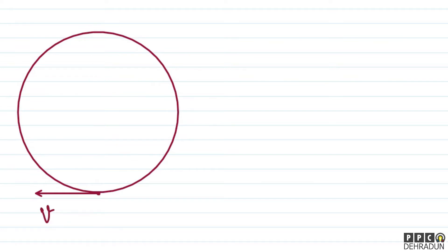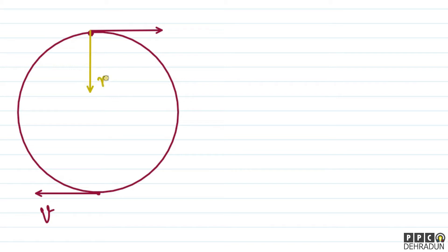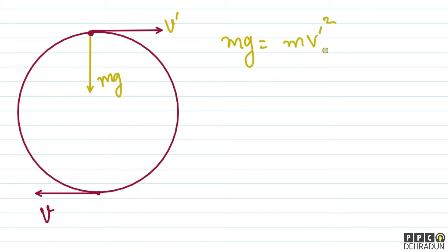Now we can complete this vertical circle. We know that tension can be zero, which will play the role of the required centripetal force. So the extreme condition is that tension is zero and the required centripetal force is provided by mg alone. So mg = mv'²/L.